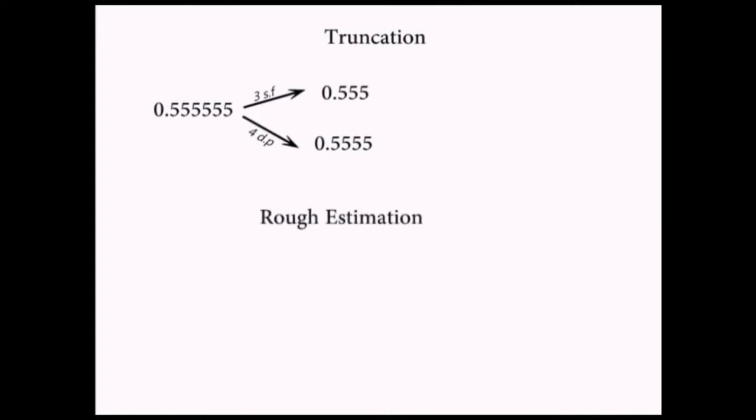Rough estimates are used to find the approximate value of calculations. This involves rounding off numbers to given significant figures to make the computations easier. For example, give the rough estimate of 15.9 plus 7.2 over 9.83. We can approximate these values as 16 plus 7 over 10, and that will give us 2.3.